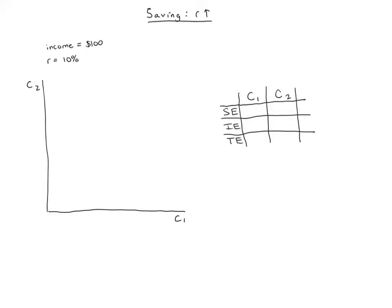So first we want to construct our budget constraint. The easy point to get is first on this x-axis we know that if we consume all of our money today that would be a hundred dollars worth of consumption. So the maximum c1 we could get is a hundred dollars and then we can get a second point and connect the dots to get our budget constraint.